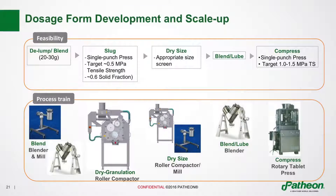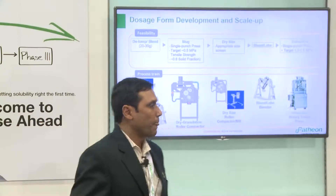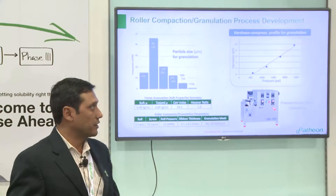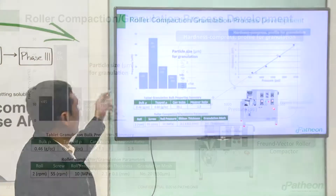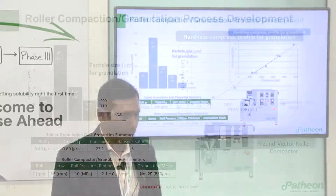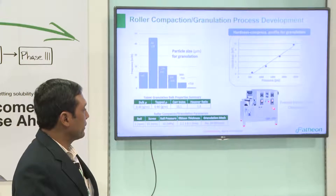When we scale up, we go to larger pieces of equipment: a co-mill, blender, roller compactor, mill, additional blending step, and compression. We understand this process train very well and conducted it for this project. I'm showing you data from the scale-up work: particle size of the granules after roller compaction, hardness compression profiles showing excellent compressibility, flow properties showing excellent flow, and the granulation parameters used for this process — all good data that was valuable for making a robust drug product.